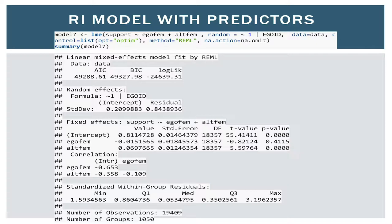Now I've added some predictors — ego gender and alter gender, just two variables. We have our random effects and fixed effects. If we're interested in interpretation, this is the effect of ego gender, with our beta and p-value. This tells me that ego being a woman does not have any significant effect on how much support she gets.